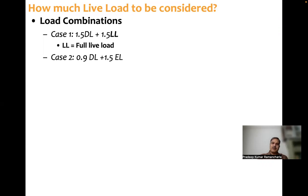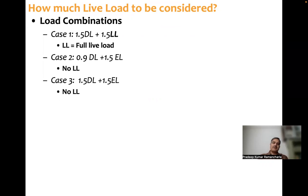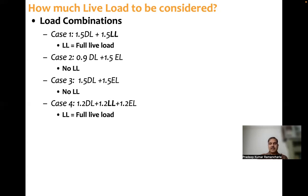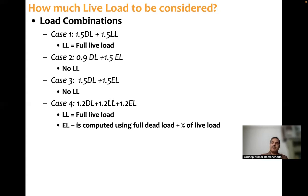Case two is 0.9 times dead load plus 1.5 times earthquake load — here there is no live load. Case three also has no live load: 1.5 times dead load plus 1.5 times earthquake load. Case four is 1.2 times dead load plus 1.2 times live load plus 1.2 times earthquake load — here live load is full live load. Now, while computing earthquake load, we use full dead load plus an appropriate percentage of live load in the computation of earthquake load.